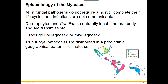True fungal pathogens are distributed in pretty predictable geographic locations, mostly because of the temperature and soil conditions these pathogens prefer. You can see on a map the continents where most of these fungal pathogens are found and which ones are prevalent in our area. For others, you would have to travel to different parts of the world to pick them up.